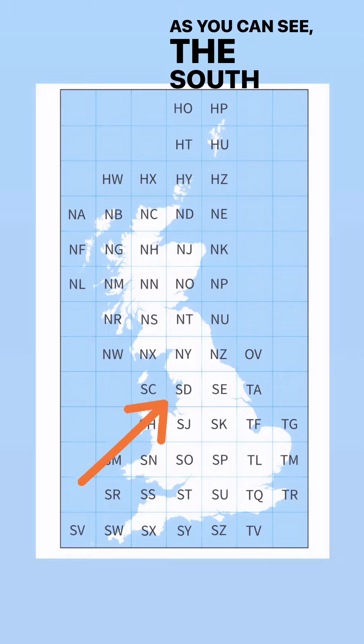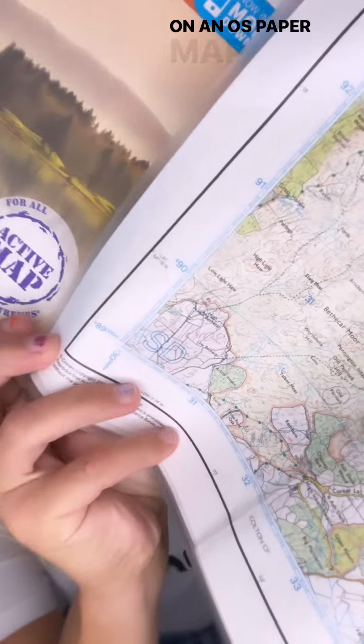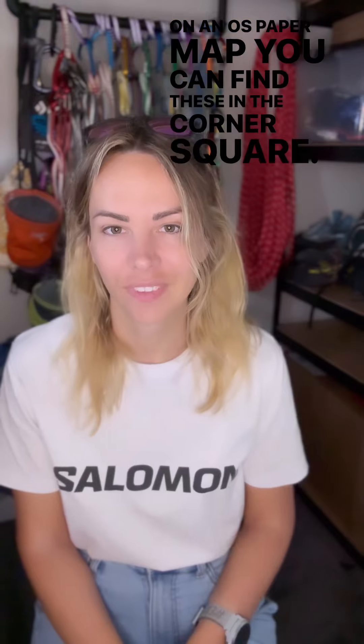As you can see, the South Lakes is covered by the two letters SD. On an OS paper map you can find these in the corner square. Back to the map now, let's have a look at how to take a grid reference.